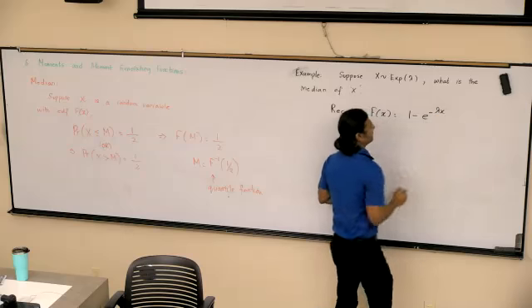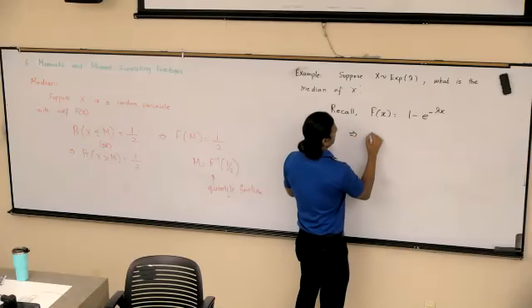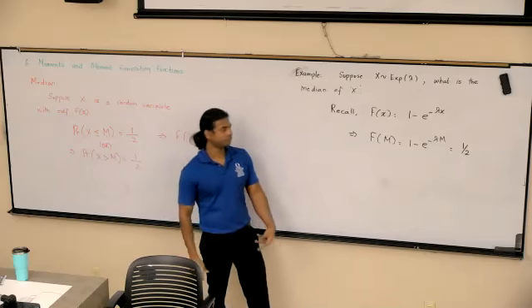One minus e raised negative lambda x is the CDF of an exponential distribution. So this would mean F of m must be equal to one minus e raised minus lambda m. And what should that value equal to? One half. Now we just have to solve for m.